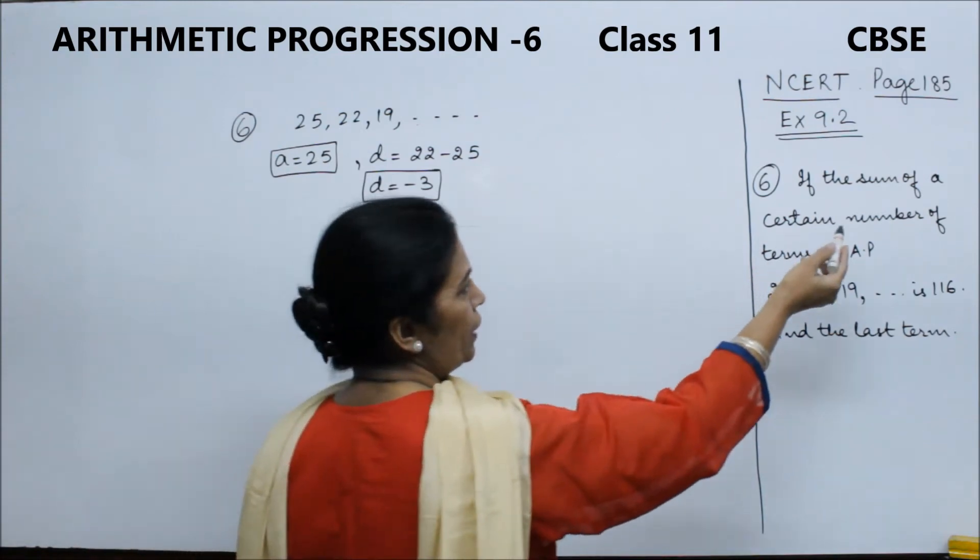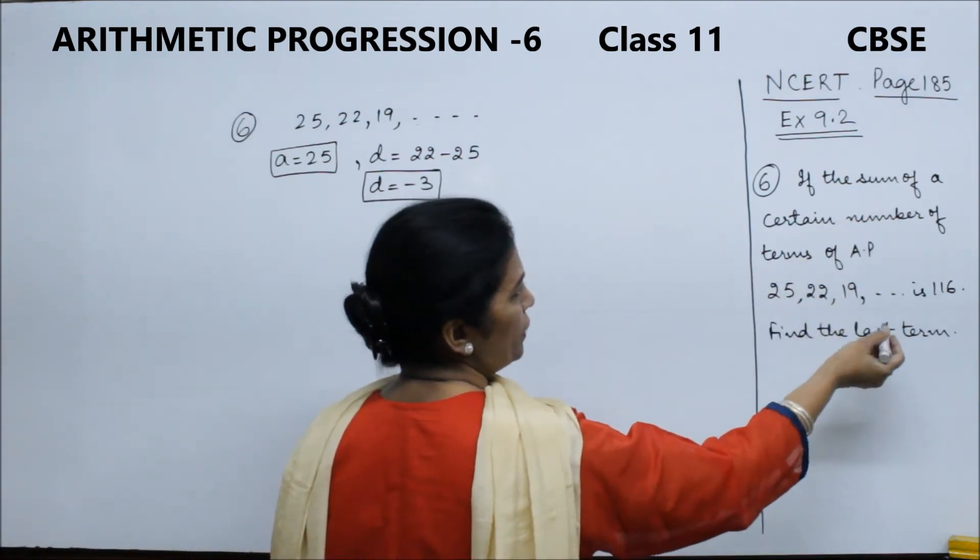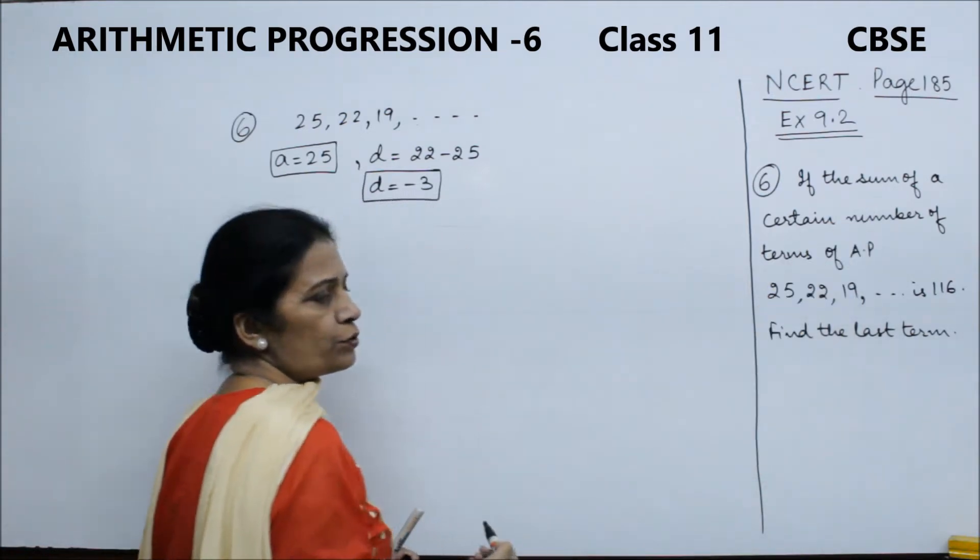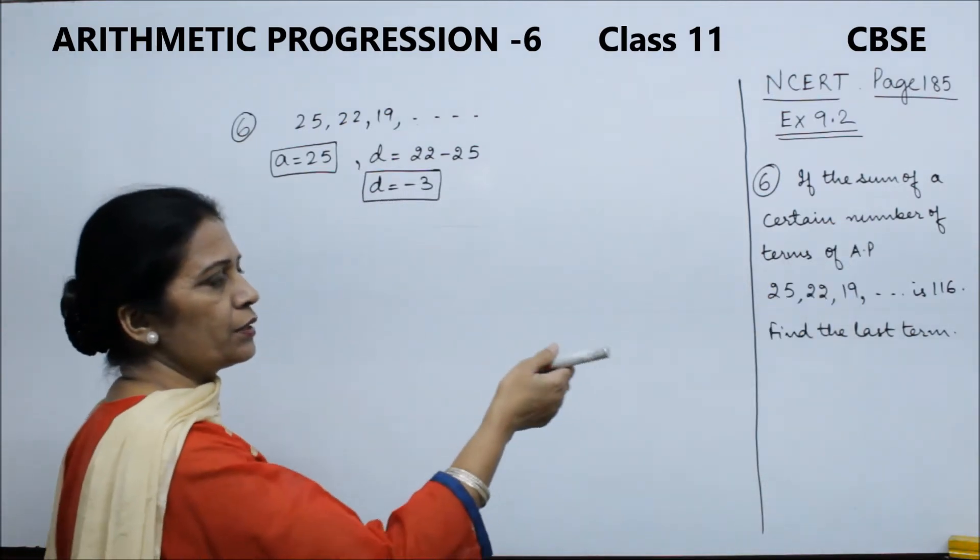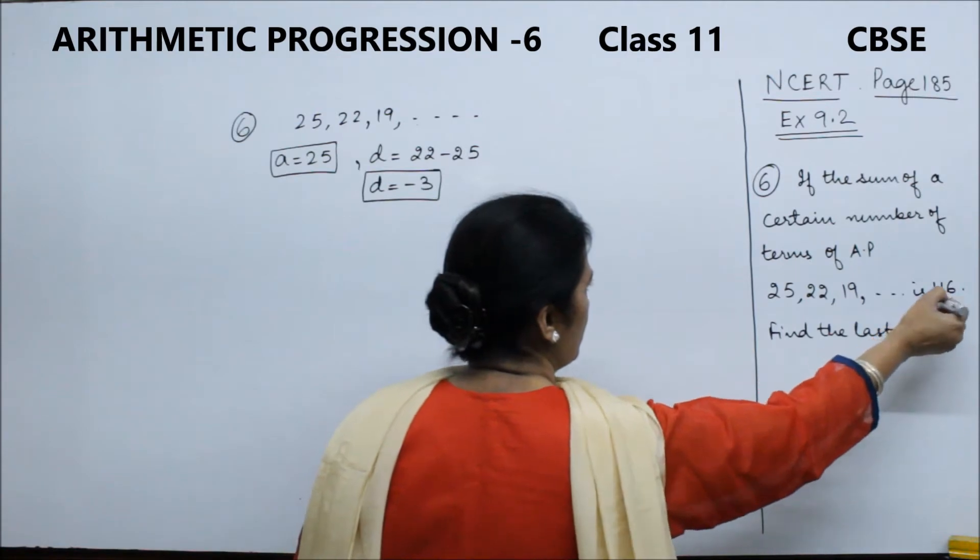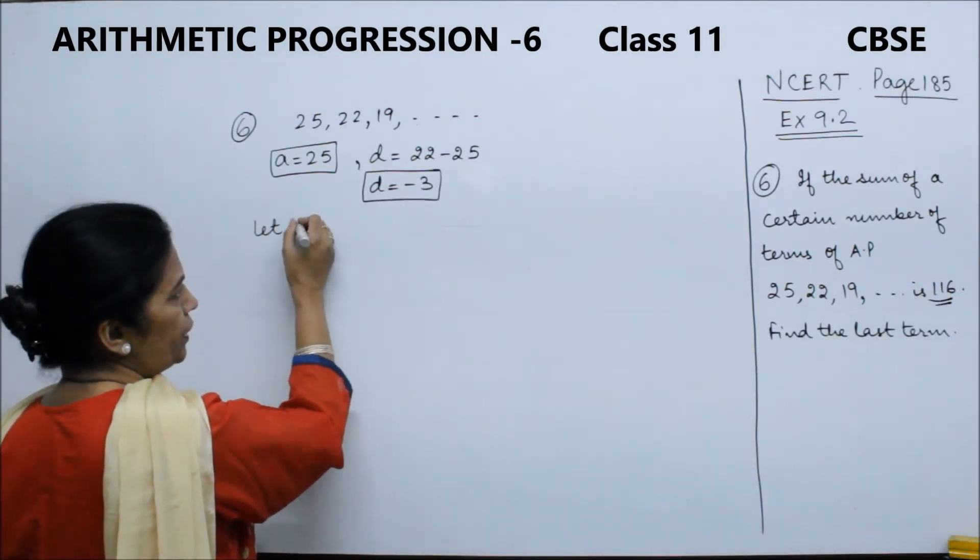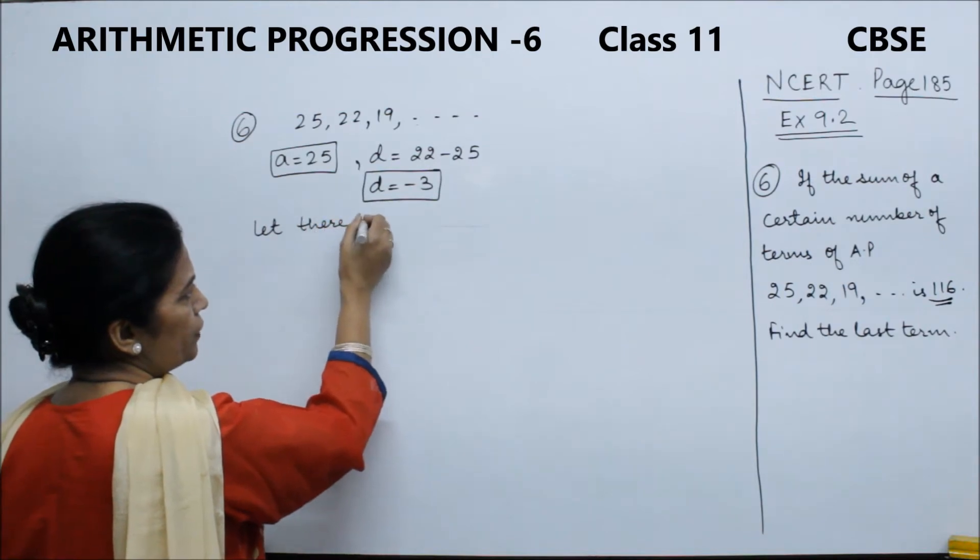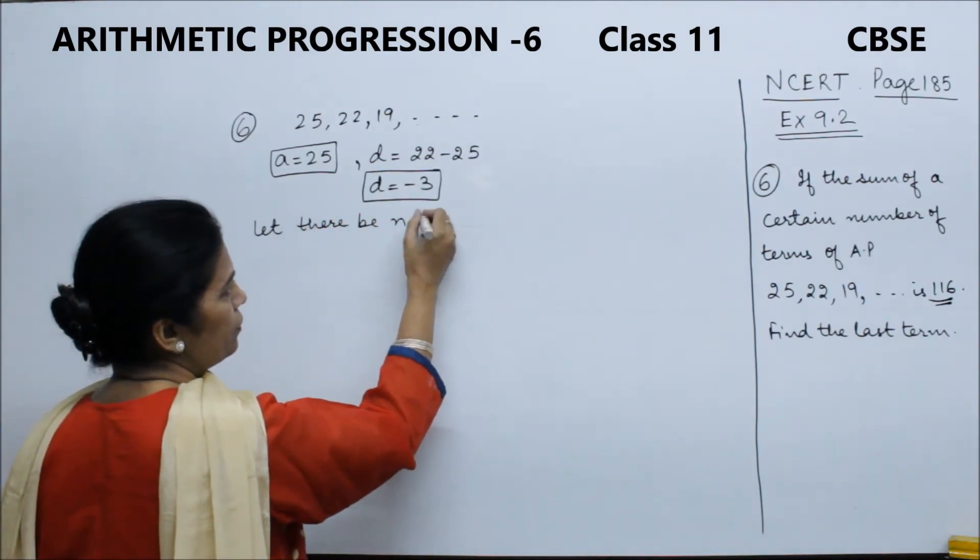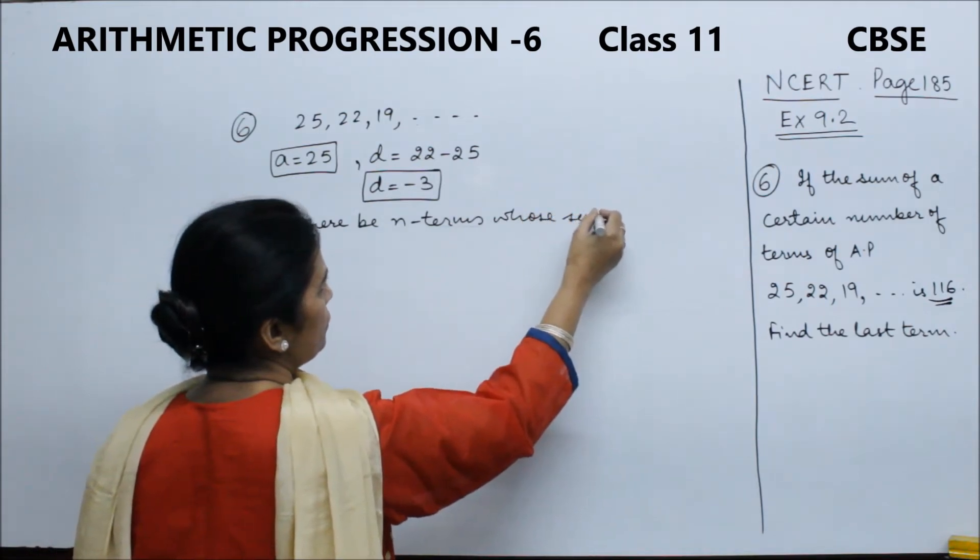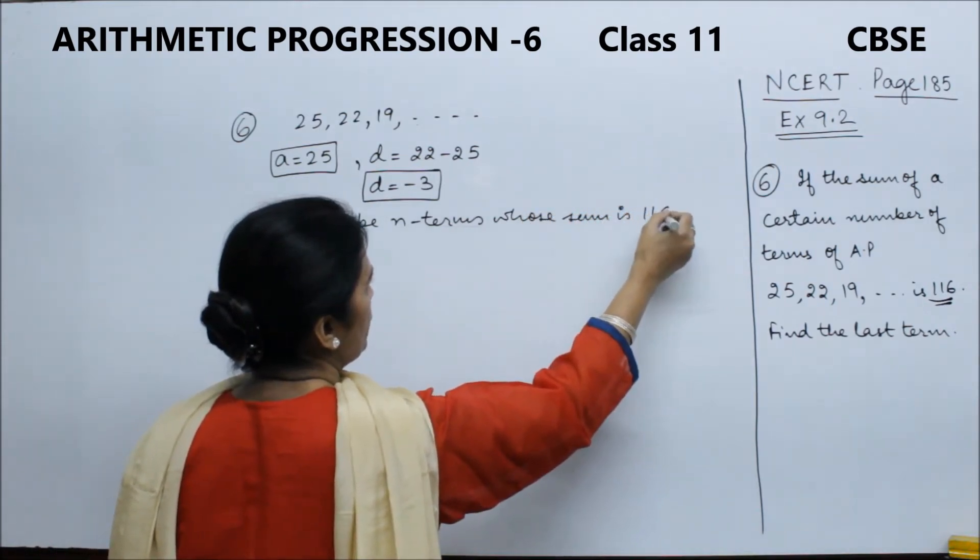The question is, last term I am not going to tell you directly. The sum of certain terms is 116. So, let there be n terms, whose sum is 116.